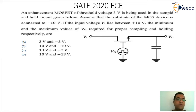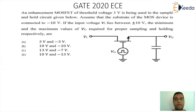There are four options given. A: 3V and minus 3V. B: 10V and minus 10V. C: 13V and minus 7V. And D: 10V and minus 13V.